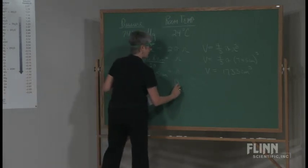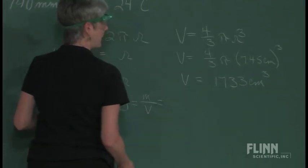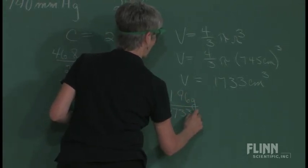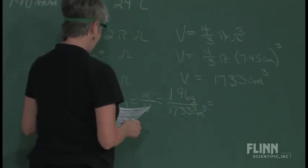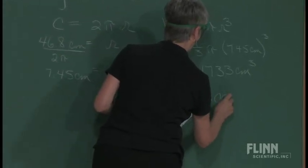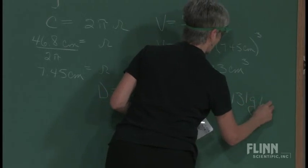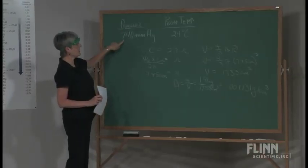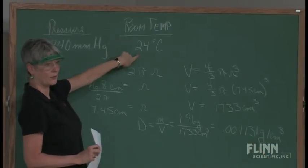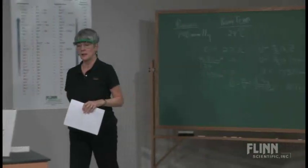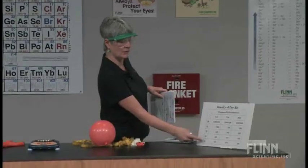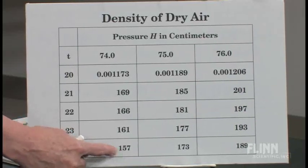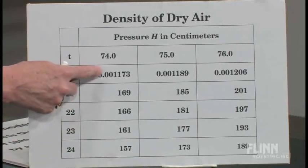Density equals mass divided by volume. The mass loss was 1.96 grams per 1733 cubic centimeters, giving a density of 0.001131 grams per cubic centimeter. The pressure is 740 mmHg and the temperature is 24°C. From the CRC table at 24°C and 740 mmHg (74 cm), the accepted density of air is 0.001157 grams per cubic centimeter.